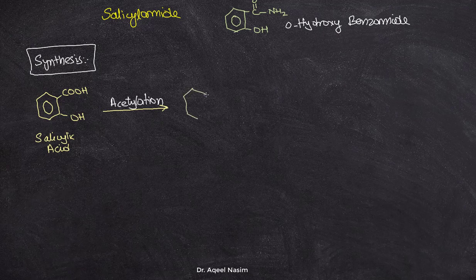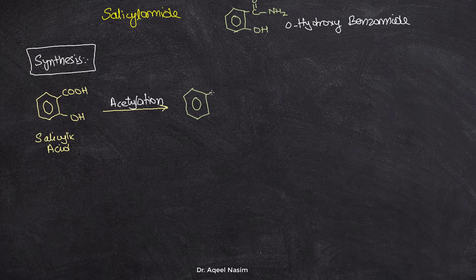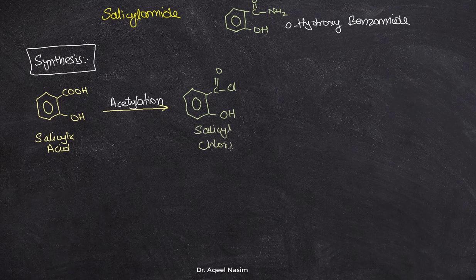It undergoes acetylation and yields salicyl chloride. Salicyl chloride has the carbonyl carbon along with the chlorine, and the OH is in the same position as in salicylic acid.